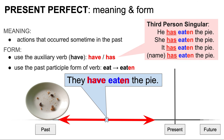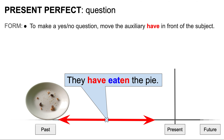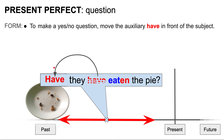Please note that the third person singular form of the auxiliary have is has. So for third person singular nouns such as he, she, it, and singular names, we use has. For example, he has eaten the pie. To make a yes-no question, move the auxiliary have in front of the subject. For example, they have eaten the pie becomes: have they eaten the pie?